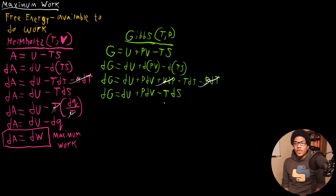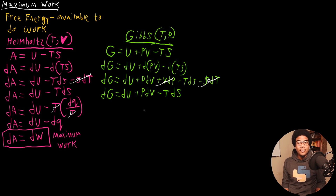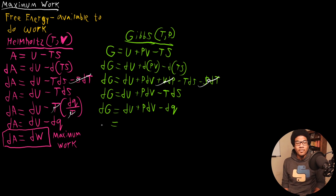This TDS term is the same as DQ — we looked at that in the last video. So we can make that substitution: DG equals DU plus PDV minus DQ. We again end up with this DU minus DQ term, and DU minus DQ equals the work. So we get DG equal to DW plus PDV.